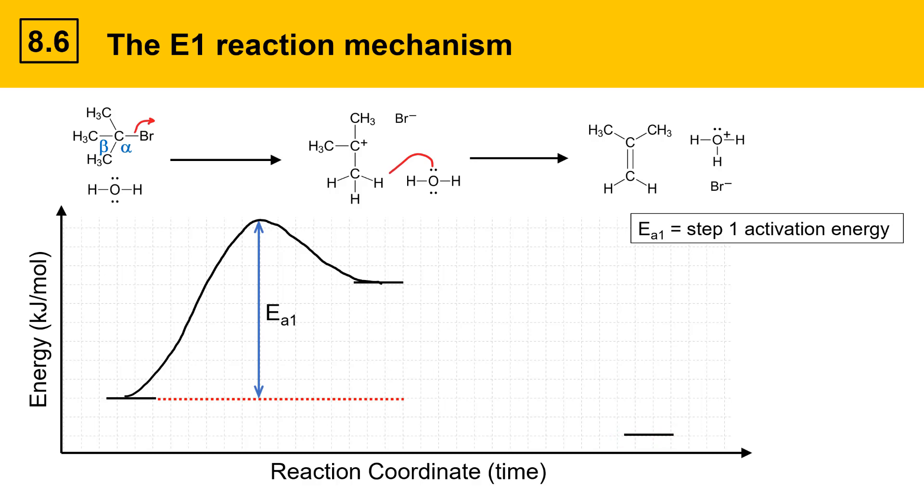As the base deprotonates the carbocation, we can draw the energy changes that are associated with that reaction. This reaction also has a transition state that exists at the top of the second peak, and again we can draw a reference line out and measure the distance between the starting point, the carbocation, and measure the distance from the intermediates to the transition state, and that is Ea2, which is the activation energy of the second step.